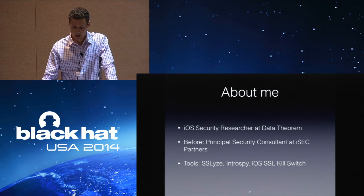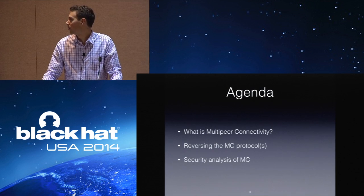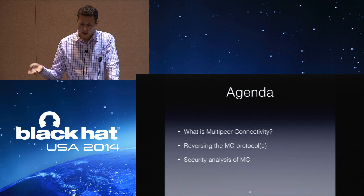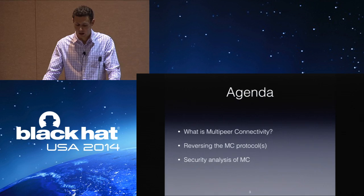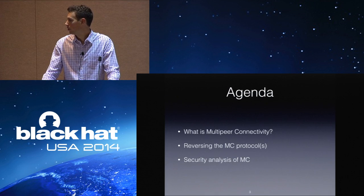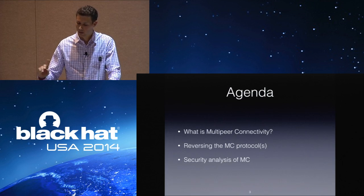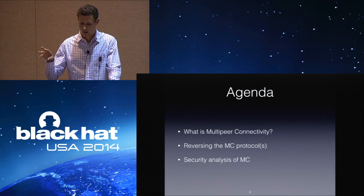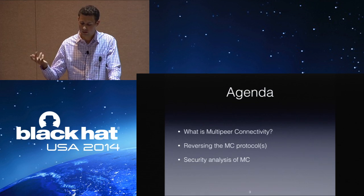I worked on a bunch of tools that you may or may not have used. Today I'm here to talk about this new Apple technology called multi-peer connectivity, which is pretty cool. First, I'll describe what it actually is and the kinds of problems it's trying to solve. Then I'll describe how I reverse-engineered the protocol because it's all undocumented. And lastly, once we know how it really works, I'll talk about the actual security of the protocol and the assumptions you should make as a developer using that technology.